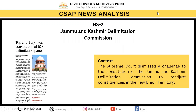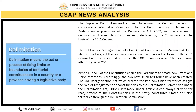The first topic is about the Jammu and Kashmir Delimitation Commission, which was recently challenged in the Supreme Court. The challenge sought to readjust constituencies in the new Union Territory, but was directly rejected. The Supreme Court dismissed the plea challenging the Centre's decision to constitute a Delimitation Commission for the UT of J&K under the provisions of the Act of 2002.